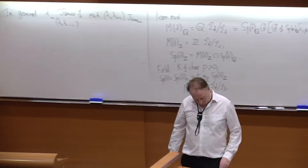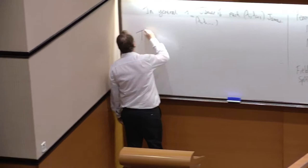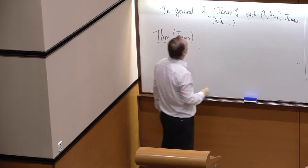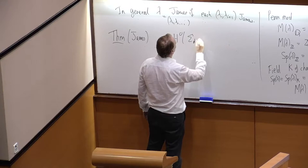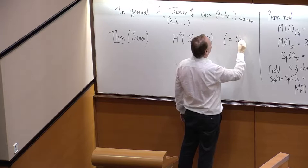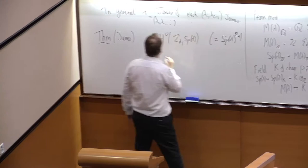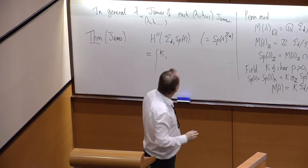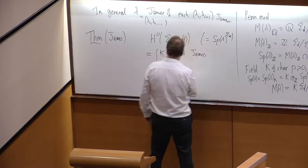So, the result in degree 0 proved by James, surprisingly, is that the 0th cohomology, James is James. That's just the fixed points. It's either a one-dimensional space, if λ is James, or 0 if λ is not James.